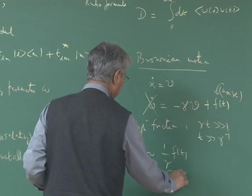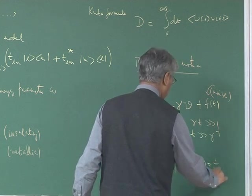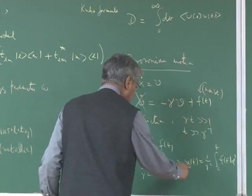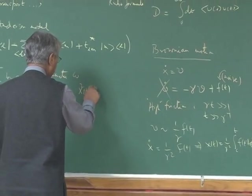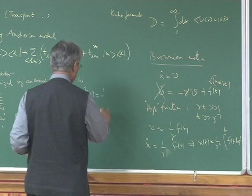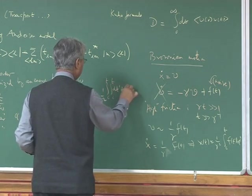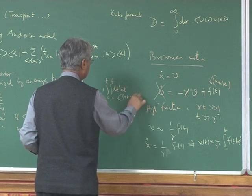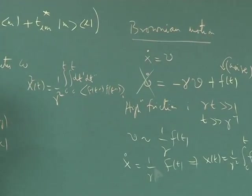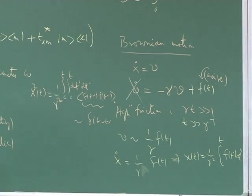So you integrate this equation and get x of t as 1 over gamma squared integral 0 to t, f of t prime dt prime. The quantity you want to look at is x square of t. Therefore, x square of t is scaling like just t. One of the integrals you can do—if it's white noise, then it's delta t minus t prime. You'll find x square of t is scaling like just t. One integral simply is linear in time. So that's diffusion. That's what Einstein did in 1905.